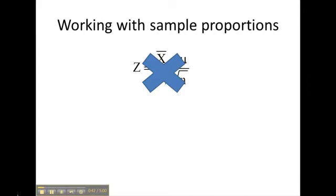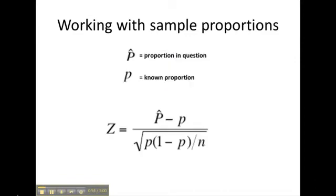But we can still use the normal distribution, and we can allow for sampling error. This is what the sampling error for a proportion looks like. Let's see how that fits into a Z formula for sample proportions. Here's our formula to get a Z value, and of course, then we can just look up the Z value.